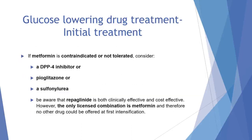If metformin is contraindicated or not tolerated, the initial drug treatment will be with either a DPP-4 inhibitor, pioglitazone, or a sulfonylurea. We need to be aware that repaglinide is both clinically and cost effective; however, the only licensed combination is with metformin, so no other drug could be offered at first intensification — making it a less preferable choice when metformin is not tolerated.